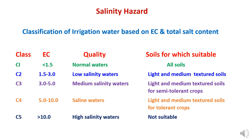For EC ranging from 3.5 to 5 mmhos per centimeter, the class is C3, classified as medium salinity water, suited to light and medium textured soils for semi-tolerant crops. Where electrical conductivity is between 5 to 10, it comes under class C4, referred as saline water, suitable for light and medium textured soils for tolerant crops. Where electrical conductivity is more than 10, it comes under class C5, classified as high salinity water, and this water is not suitable for irrigating crops.